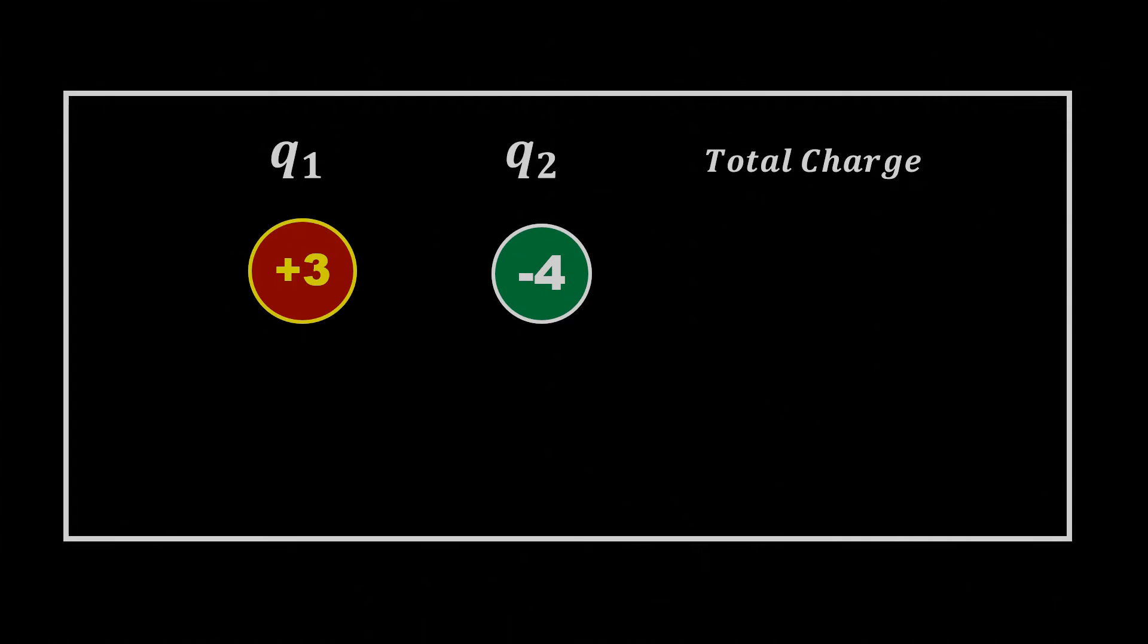This property states that if an isolated system has two charges, Q1 equals plus 3 and Q2 equals minus 4, then the total charge of the system can be obtained by simply adding these charges algebraically as real numbers.